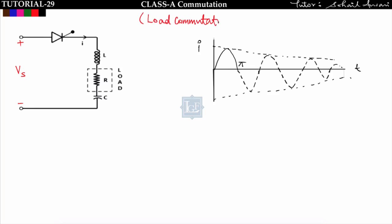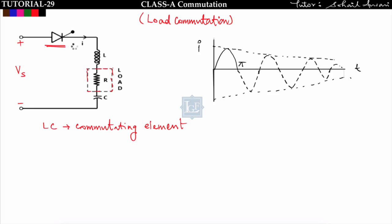Let us take one DC voltage source connected with a thyristor, and one load is connected having resistance R. The L and C are known as commutating elements — these two are responsible for turning off the SCR. As we know, the turn-off of an SCR is not in our hand; either it depends on the supply or I have to attach a commutation circuit. So the LC elements are the commutating elements used to turn off the SCR.